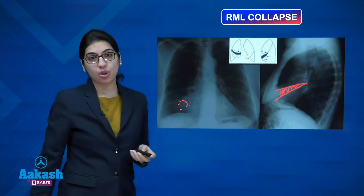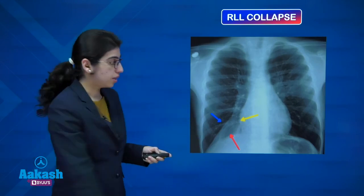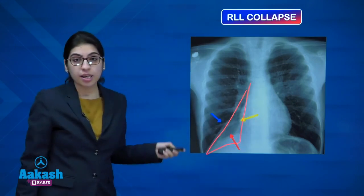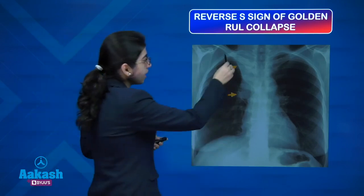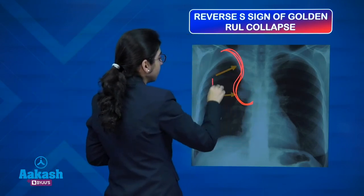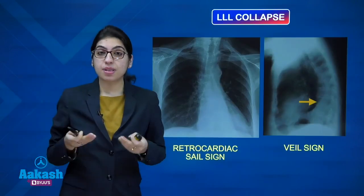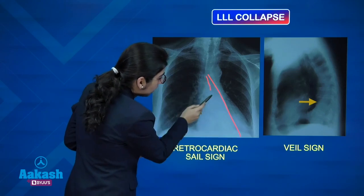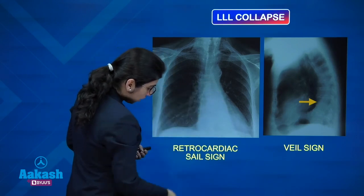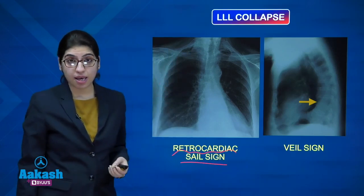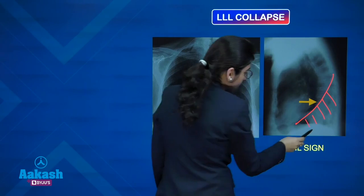Frontal X-ray of right middle lobe collapse shows opacity obscuring the right heart border. Right lower lobe collapse presents as a triangular opacity in the right lower lung obscuring the diaphragm. A reverse S-sign — the reverse S-sign of Golden — is typically seen with right upper lobe collapse. Left lower lobe collapse similarly shows a triangular opacity on the left side, but because the heart is on the left, it appears as a retrocardiac triangular opacity. On lateral view, left lower lobe occupies a posterior part, appearing as a wheel sign.